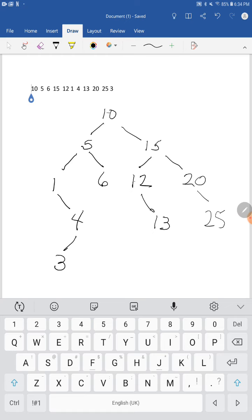Let's say we wanted to find out if 12 was in the tree. We start right here. 12 is greater than 10, so we go to the right. 12 is less than 15, we go to the left, and there's 12. Very easy to search for things.